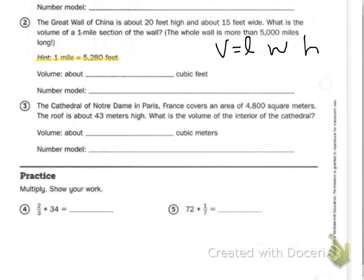I would use volume equals base times height. The practice says to multiply and show your work. Two-thirds times 34, and 72 times one-seventh.